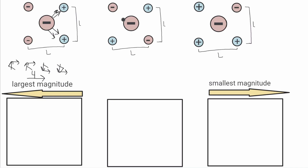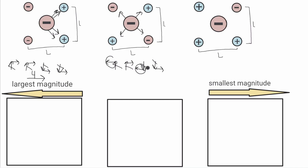Moving on to the next one, it's going to get repelled in two corners and attracted to the other two corners. There is one arrow going up and to the left, one going up and to the right, one going down and to the left, and one going down and to the right. The two up arrows and two down arrows cancel, and the two leftward and two rightward components also cancel. So there is no net force on the middle charged particle.